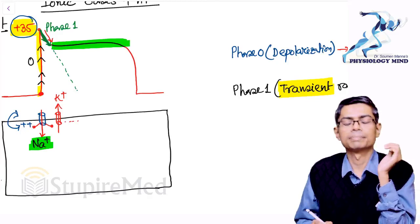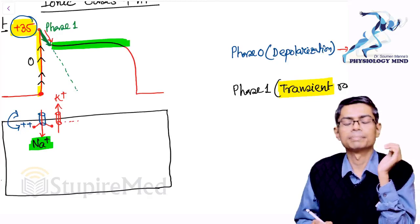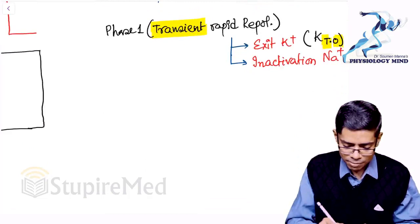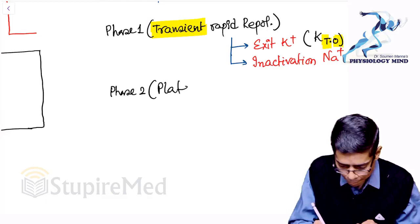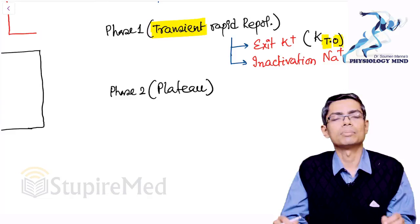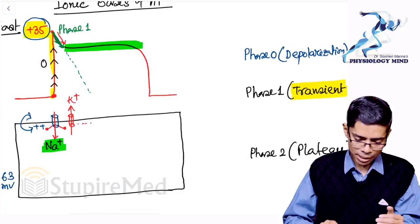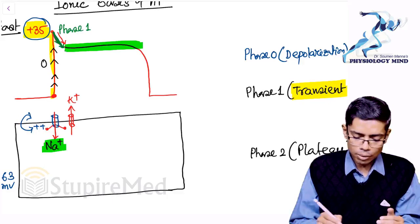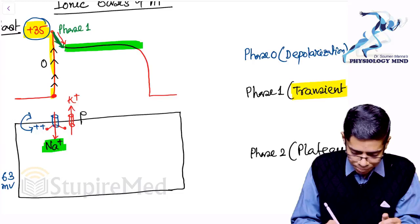Next is Phase 2 — the plateau phase — where the membrane voltage is almost stable. The reason for this plateau: potassium is already moving out of the cell, and simultaneously a calcium channel opens. The positive charges going out as potassium are balanced by positive charges coming in as calcium, keeping the membrane voltage stable.